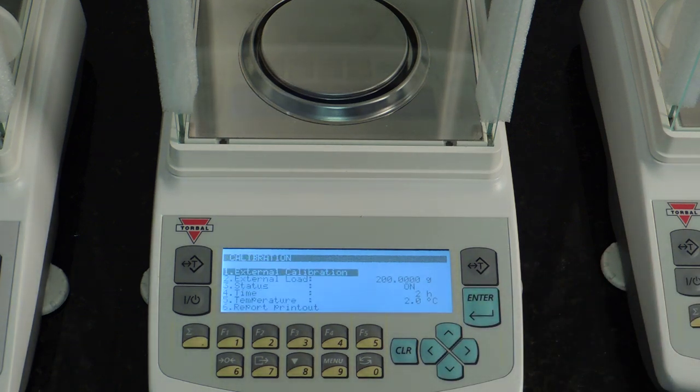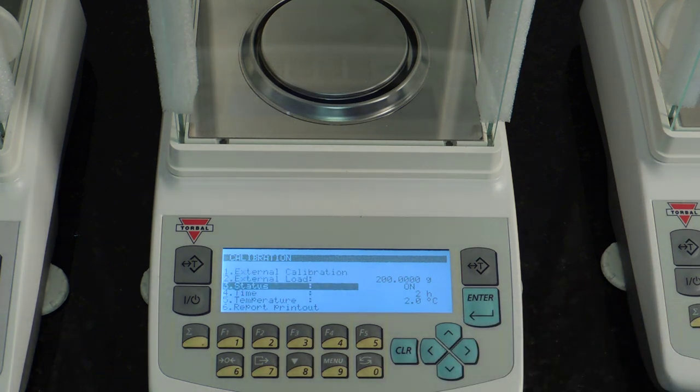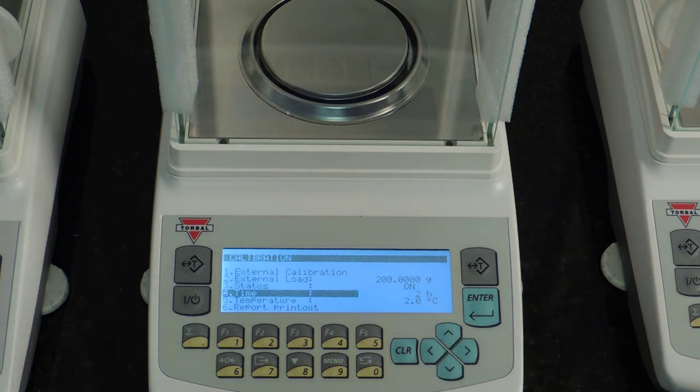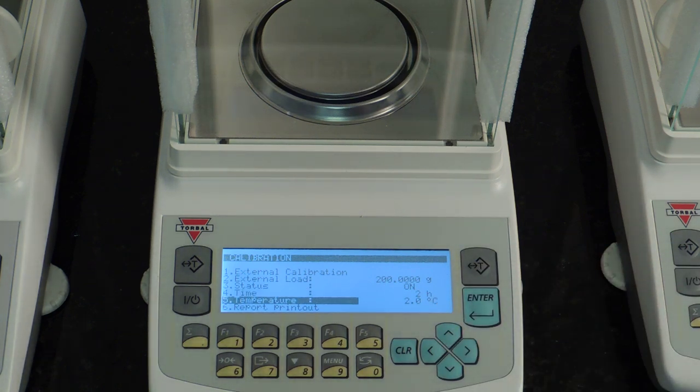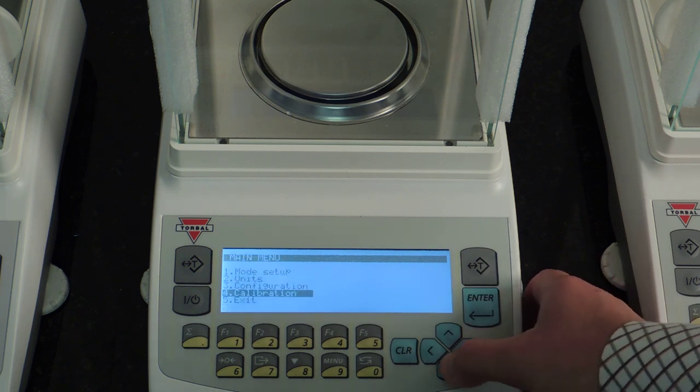Calibration, again, you can calibrate the scale with an external weight. You can configure all the parameters of the internal calibration. By default, the scale will calibrate every two hours with change of temperature at two degrees Celsius. Those features can be disabled should you like to reduce the frequency of calibration for some reason.